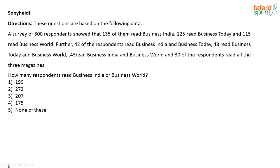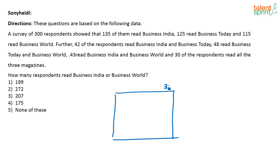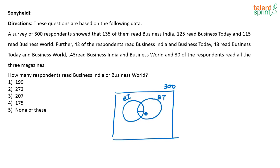How do we solve this question? There are 300 people, so let us first draw a Venn diagram because there are a lot of sets involved. It is always easier to represent such questions in terms of Venn diagrams. Totally there are 300 people — some read Business India, some read Business Today, and some read Business World.